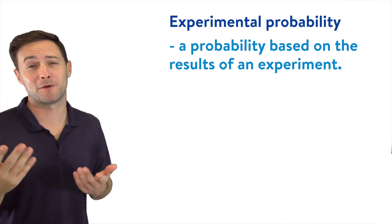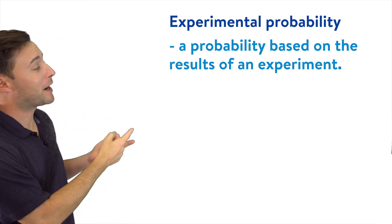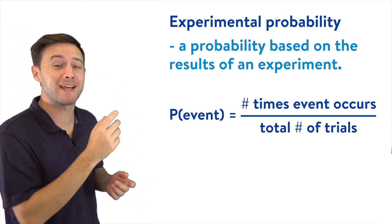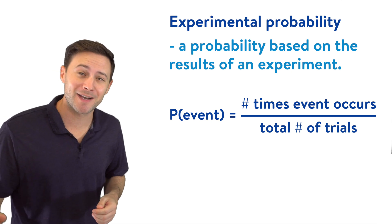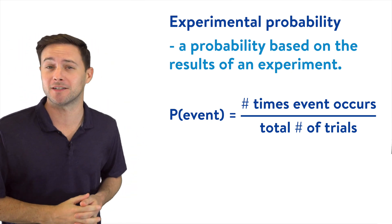To find an experimental probability is pretty simple. The probability of an event is just the number of times that event occurs divided by the total number of trials. Pretty simple.